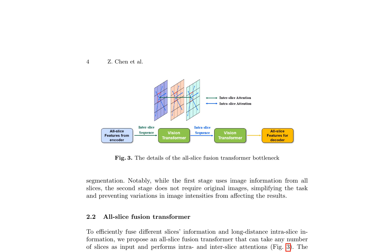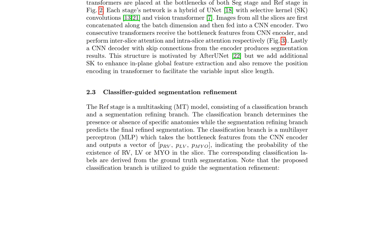This architecture is motivated by after-U-Net, with two key modifications: the addition of selective kernel convolutions to enhance in-plane global feature extraction, and the removal of position encoding in the transformer to facilitate variable input slice lengths. This design enables the model to capture complex dependencies between slices, leading to improved segmentation performance.